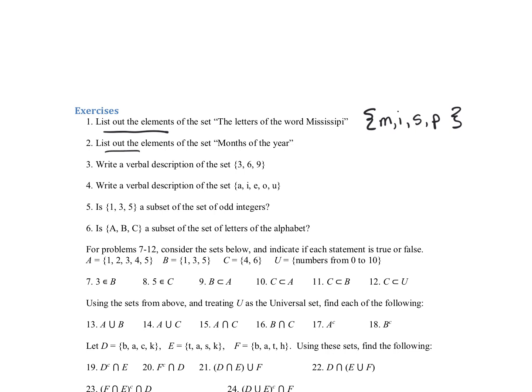For number two, we're looking at the elements for the set months in a year. So we're going to have January, February, March, April, May, June, July, August, September, October, November, and December. And remember your set should have those curly braces and every element is separated by a comma. So make sure that you have all of those in there.